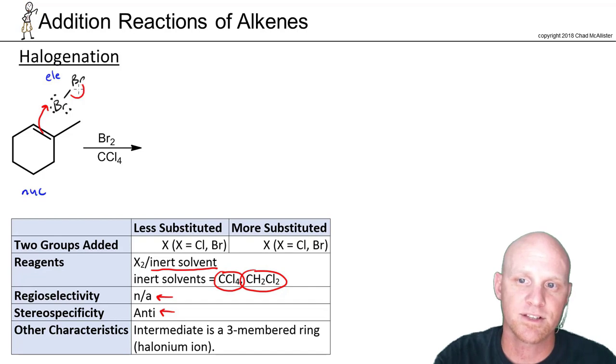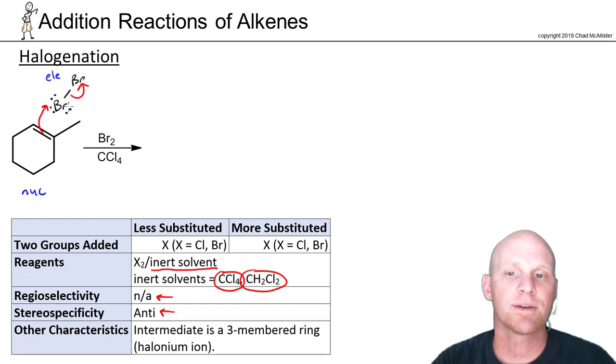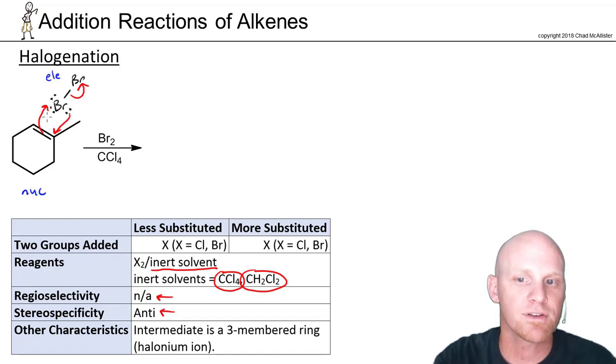We're going to go and attack bromine, so it breaks its bond with its other bromine atom. But bromine, just like mercury did earlier, says don't form a carbocation. I've got lone pairs, and I will form a bond to both carbons of the alkene, so we can avoid forming a carbocation.